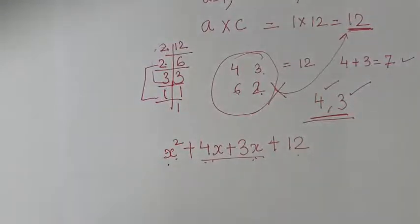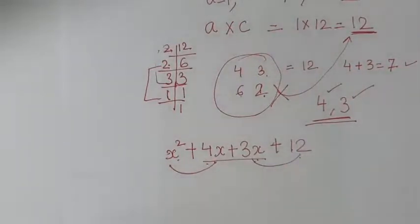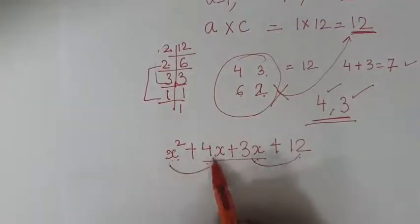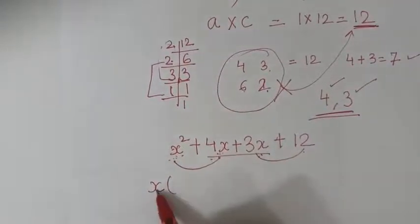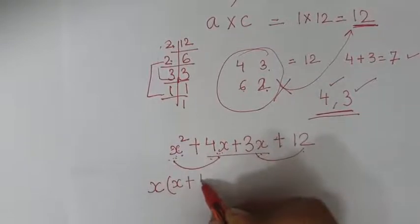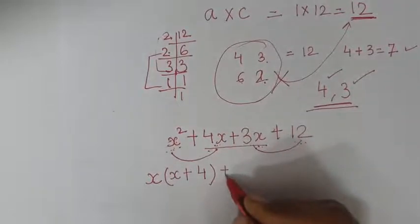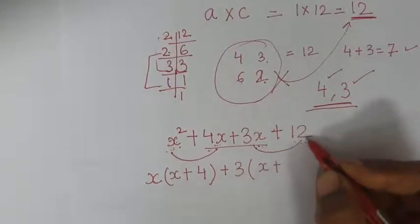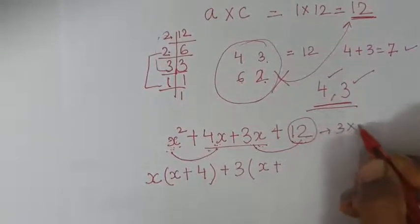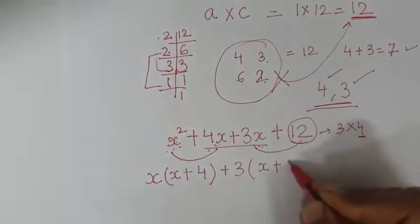Now take two terms together and find what is common. In x² + 4x, x is common. Taking x as common, what is left inside? x + 4. Then in 3x + 12, 3 is common — since 12 = 3 × 4 — so taking 3 as common, what is left? 4.